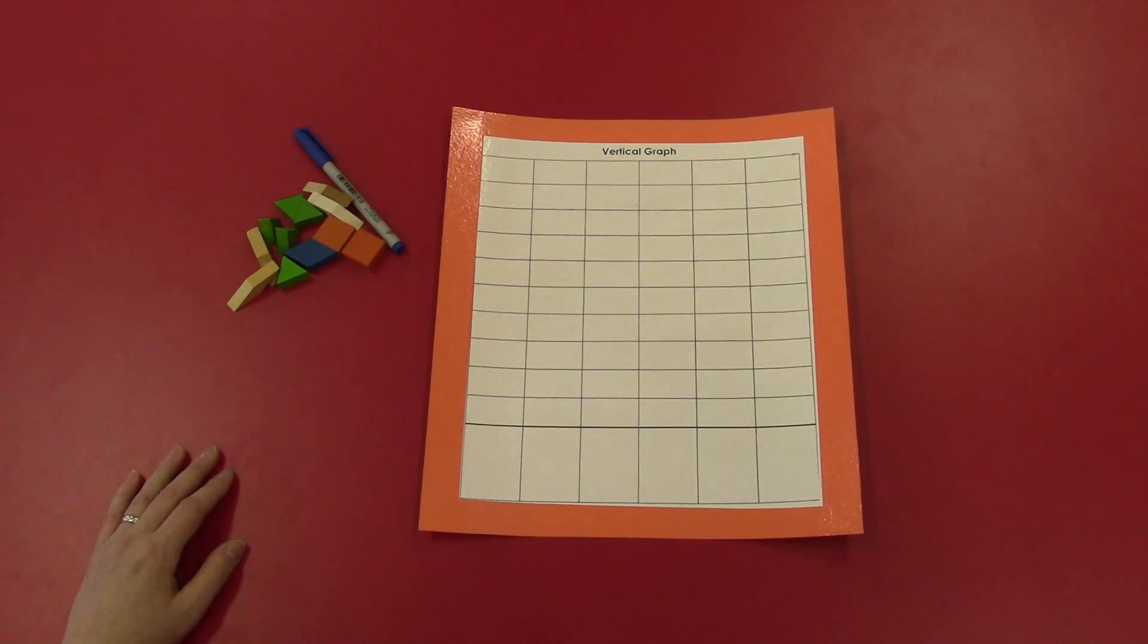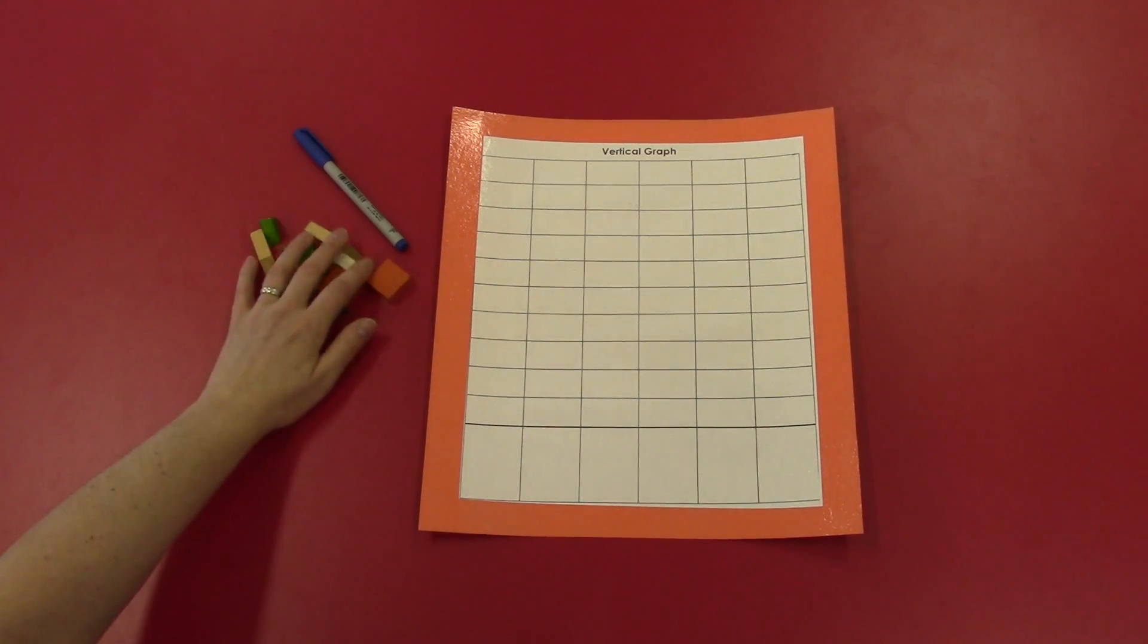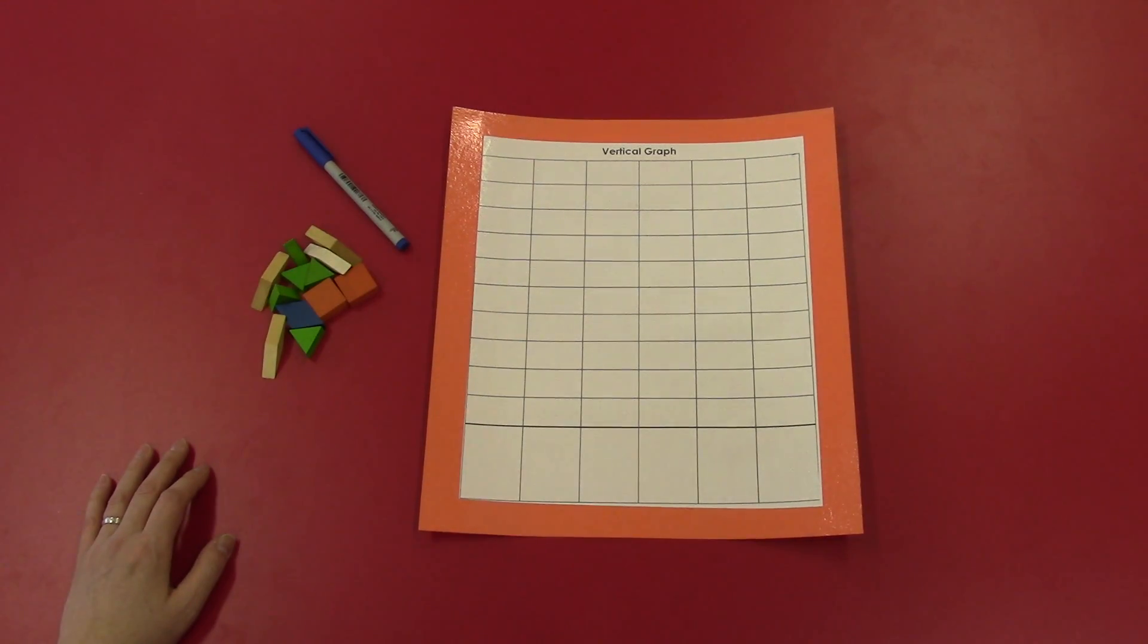The next thing you're going to need is some sort of object that you can graph, because a concrete graph uses real things. So here I have a pile of objects that I'm going to sort and then graph. You can graph anything. You could graph socks, shoes, toys, fruit in your house. Make sure that you're asking your parents permission if you're doing this at home for things to use.